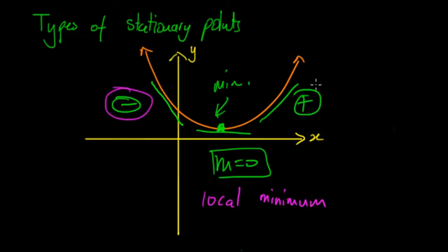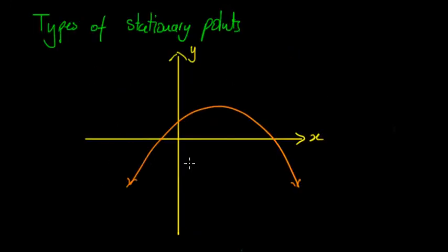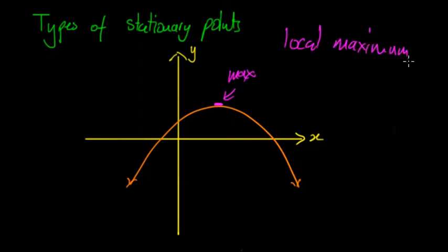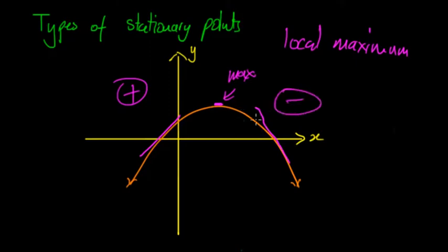A local minimum is also called a turning point because the gradients are changing — going from negative as it decreases, reaching the stationary point, then increasing again, which makes it the minimum point. For the other type of turning point — the other type of quadratic — the point is going to be a local maximum stationary point. On the left-hand side the gradient is positive, and on the right-hand side it's negative, which means it starts to decrease. Connecting positive, flat, then negative gives a local maximum.